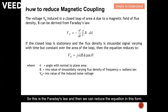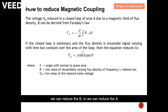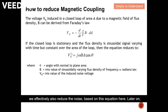From this equation you can see that if we want to reduce the noise, we can reduce B — the flux density — or we can reduce A — the area. So if we can reduce B or reduce A, we effectively also reduce the noise based on this equation. Later on I'm going to explain how we can reduce B, the flux density, and also the area A.